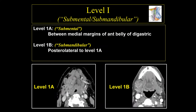The level 1 lymph nodes are divided into two separate groups. Level 1a is located between the anterior belly of the digastric muscles — these are the submental lymph nodes. Level 1b lymph nodes are located posterior-lateral to level 1a, lateral to the anterior belly of the digastric muscles.